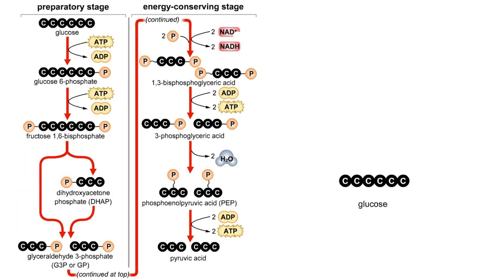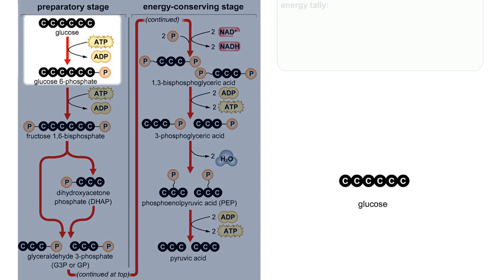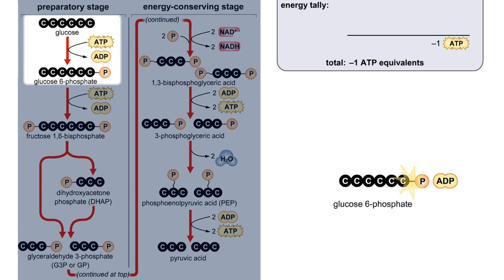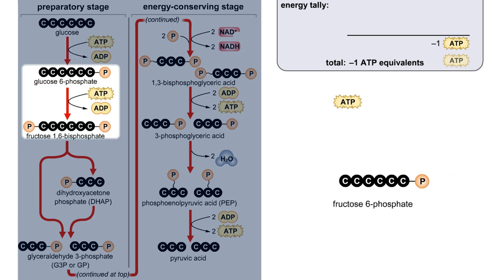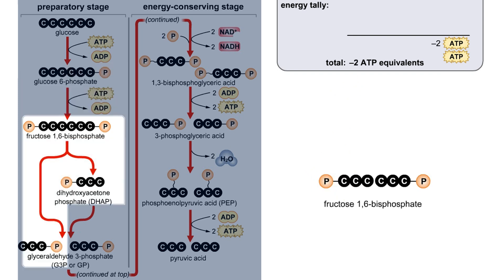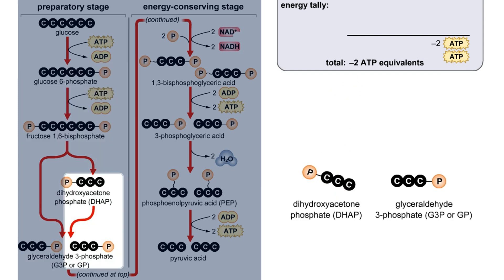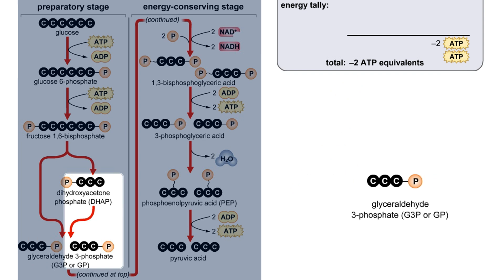The metabolism of glucose is of central importance to all living organisms, and is in fact performed in almost every cell. As one of the major sources of energy in living systems, glucose is made and broken down constantly in living cells.